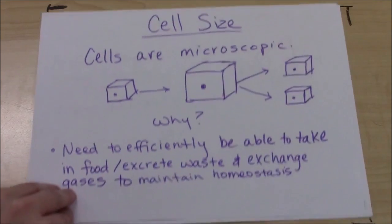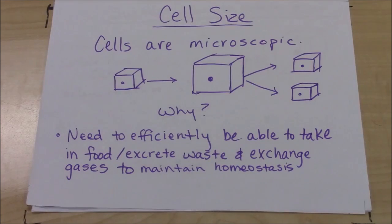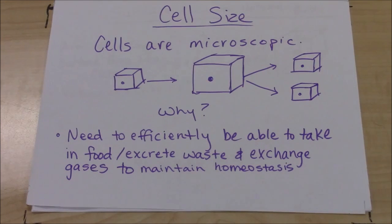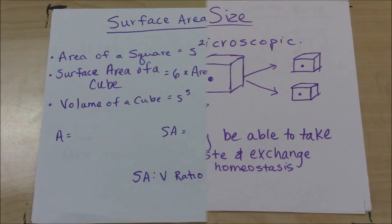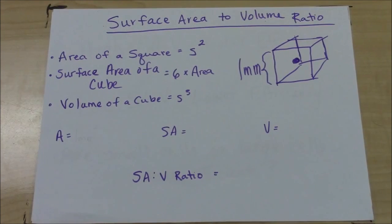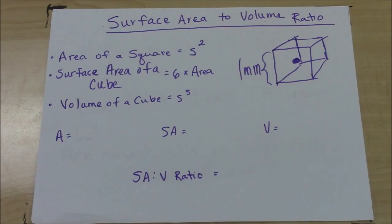The reason is that all organisms need to efficiently be able to take in food and excrete waste on a cellular level, and exchange gases to maintain homeostasis. We can determine how efficient a cell moves food and gases in and out using a measurement called the surface area to volume ratio.